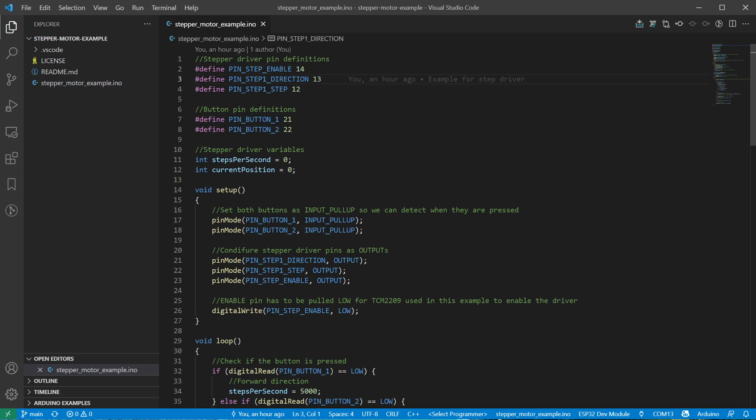The direction pin which will tell the driver should we rotate left or right, and the step pin which every time we change from low to high the motor will make one step, and of course two buttons that we will use to drive this thing. And then finally we have a variable that stores the requested steps per second and the current position we are not really using in this example.